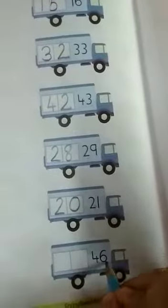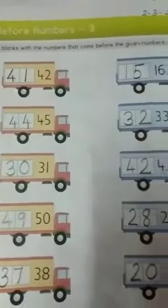Next, 29. So, 28 will come before 29. And, the last is 46. So, 45 will come before this 46.